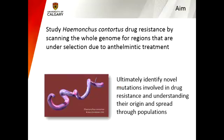The aim of my study is to use Haemonchus contortus, a parasitic worm, to study drug resistance by scanning the whole genome for regions that are under selection due to anthelmintic, or anti-worm, treatment. The ultimate goal is to identify novel mutations involved in drug resistance and understand how they originate and how they spread through populations.